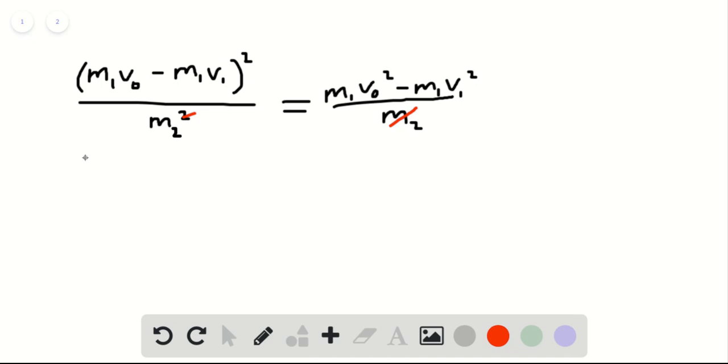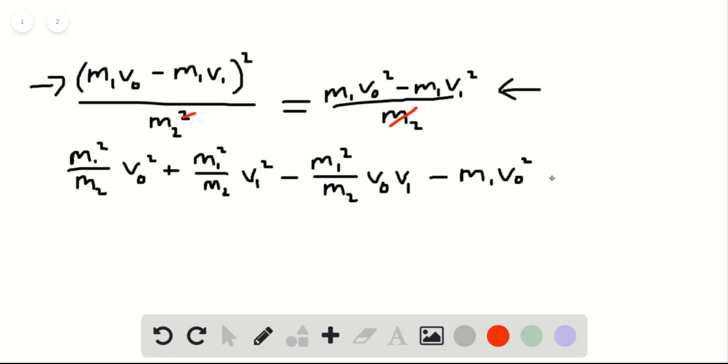We have M1 squared divided by M2 V0 squared minus M1 squared divided by M2 V1 squared. Then we have minus M1 squared over M2 V0 times V1. And then we're going to subtract over all the terms on this side of the equation and set everything equal to zero. So this is minus M1 V0 squared plus M1 V1 squared equals zero.